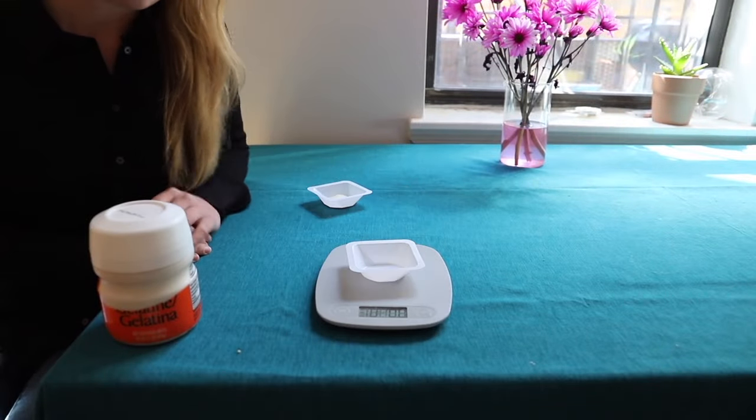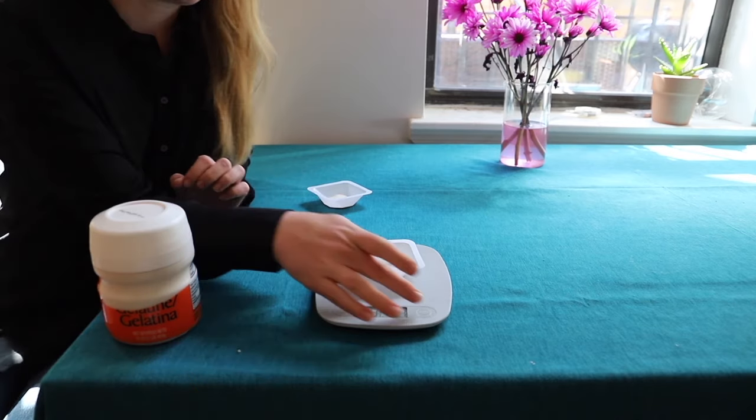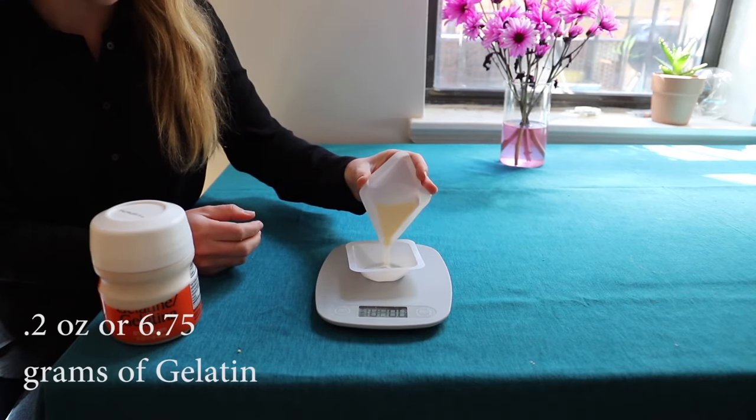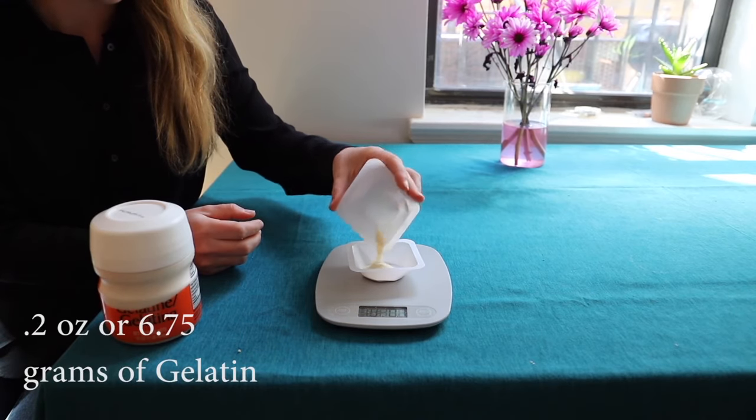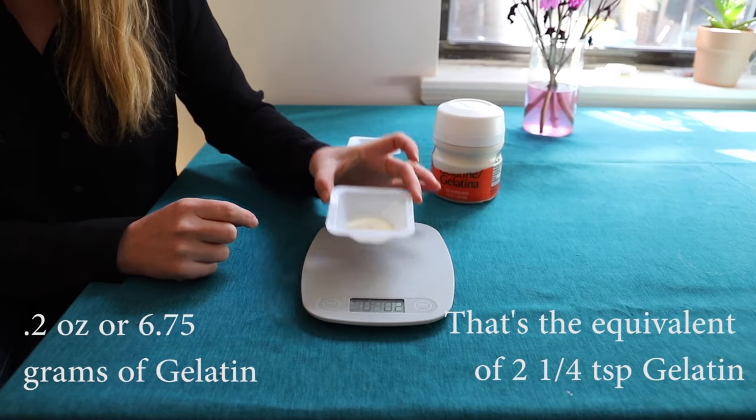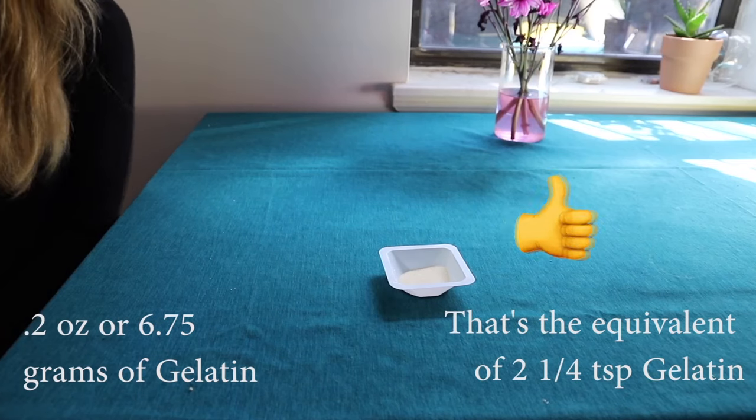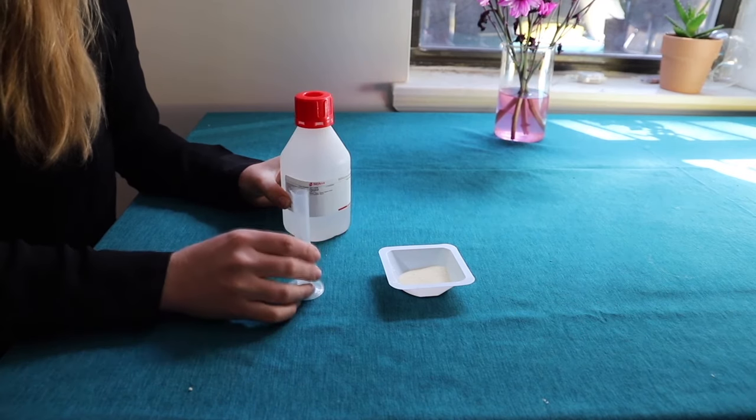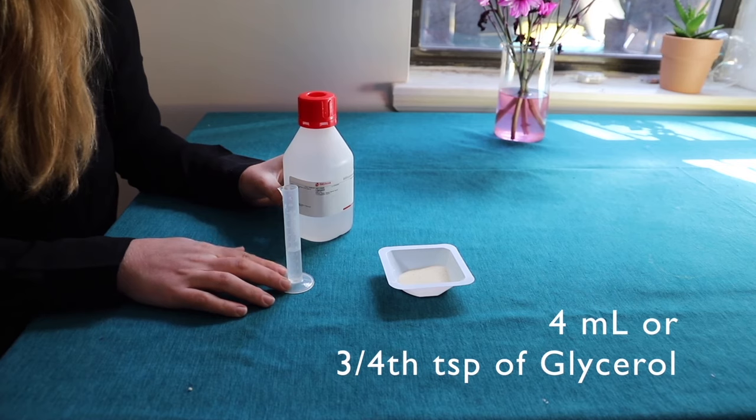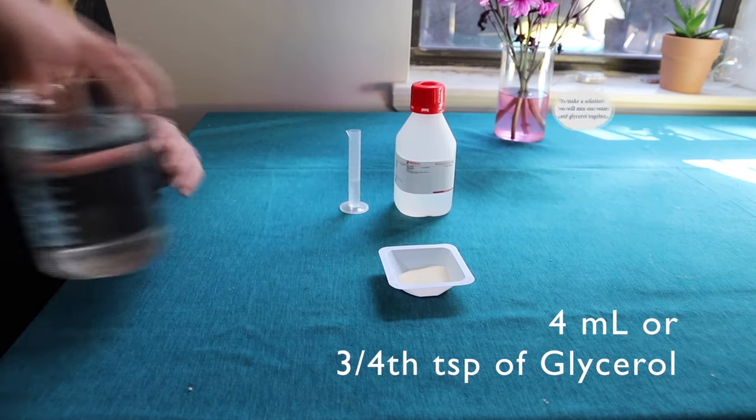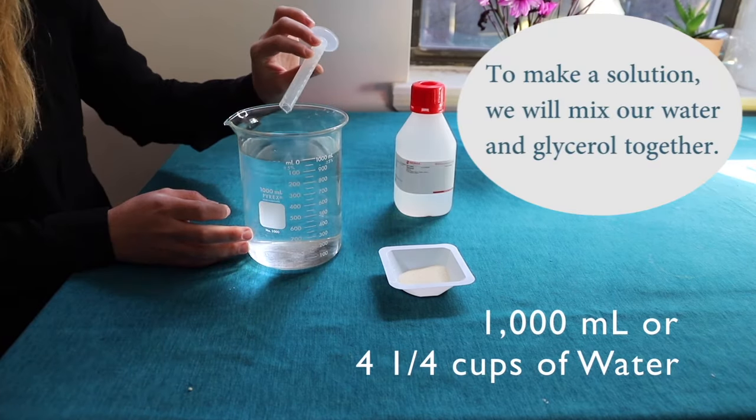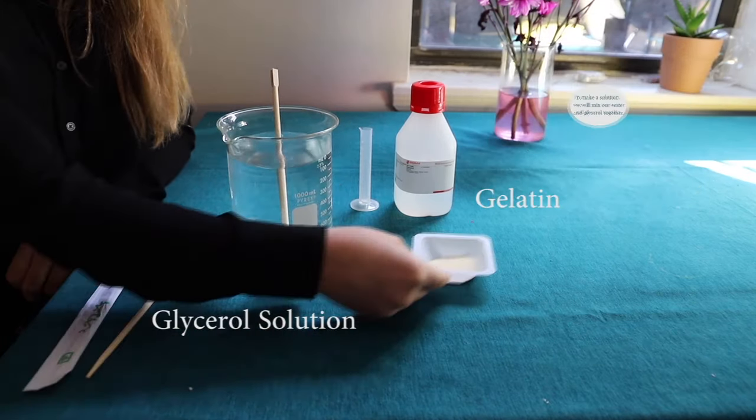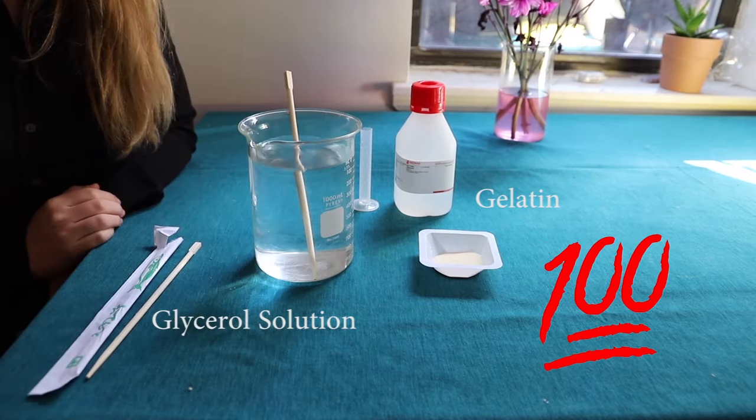The first step in making bioplastic is to measure out your gelatin. When we use a scale, we first zero it out before adding our gelatin. So there are two ounces of gelatin. And so now we have the gelatin that we'll need to run our experiment. Next, we'll measure out our glycerol to make a solution in water. To do this, we'll combine four milliliters of glycerol with a thousand milliliters of water. We're going to add our glycerol and we're going to stir our solution. So now what we have are the basic components of a bioplastic.